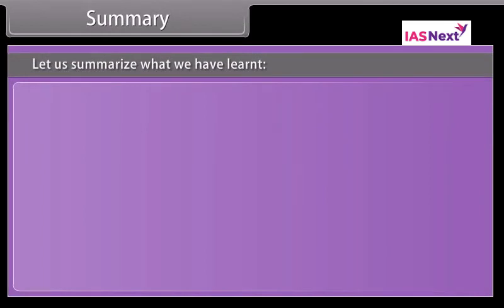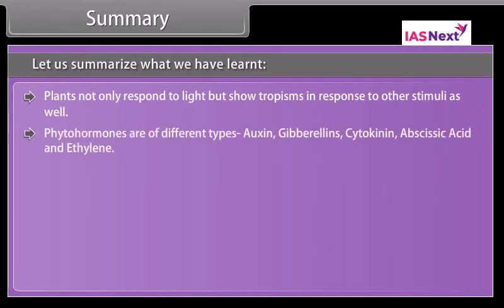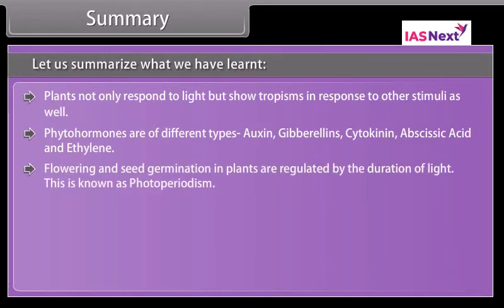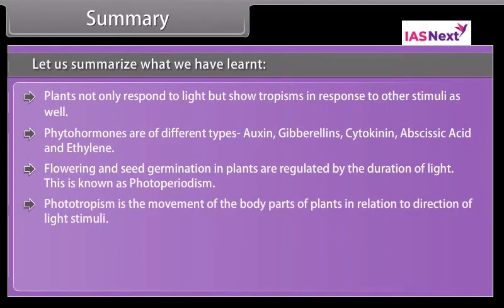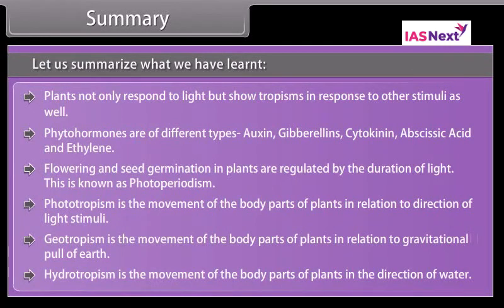Let us summarize what we have learned. Plants do not only respond to light but show tropisms in response to other stimuli as well. Phytohormones are of different types: auxins, gibberellins, cytokinin, abscisic acid, and ethylene. Flowering and seed germination in plants are regulated by the duration of light — this is known as photoperiodism. Phototropism is movement of plant parts in relation to light; geotropism is movement in relation to gravitational pull; hydrotropism is movement in the direction of water.